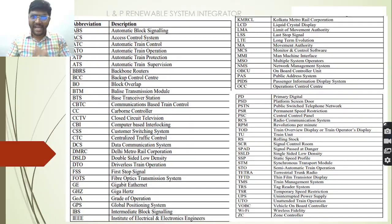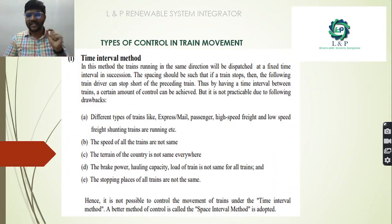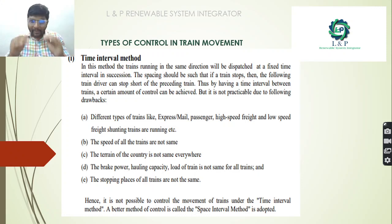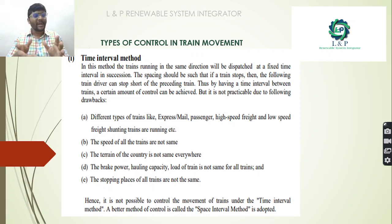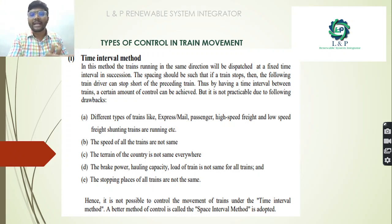The first type of train movement control is the Time Interval Method. It is a very simple process in which trains running in the same direction are dispatched at a fixed time interval in succession. However, there are drawbacks: there are different types of trains — express, mail, passenger, high-speed, low-speed — and the speed of trains is not the same. The terrain varies, and brake power, hauling capacity, load, and stopping places differ for different trains, making this method difficult to implement practically.